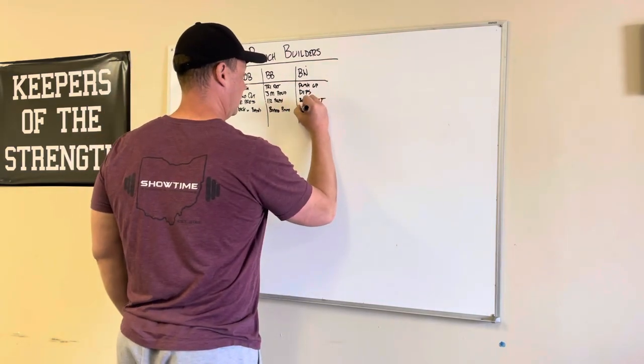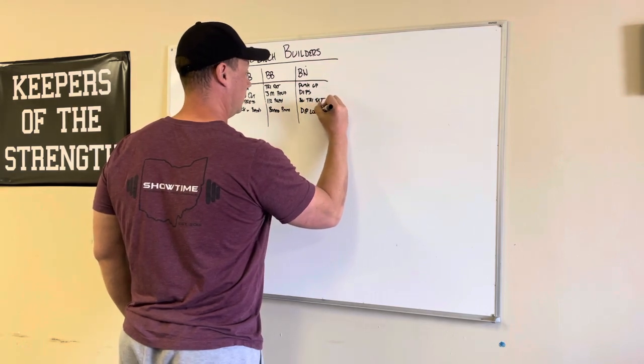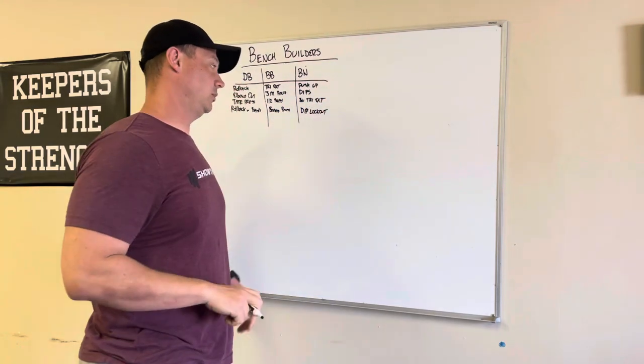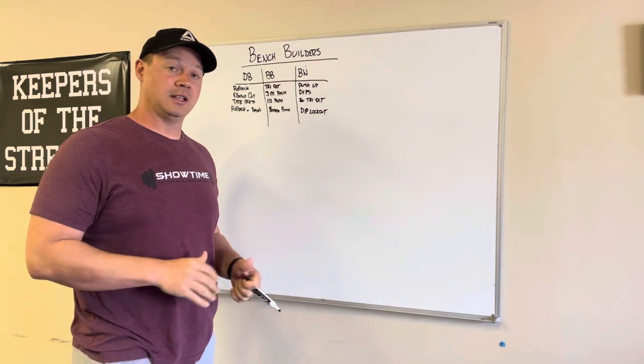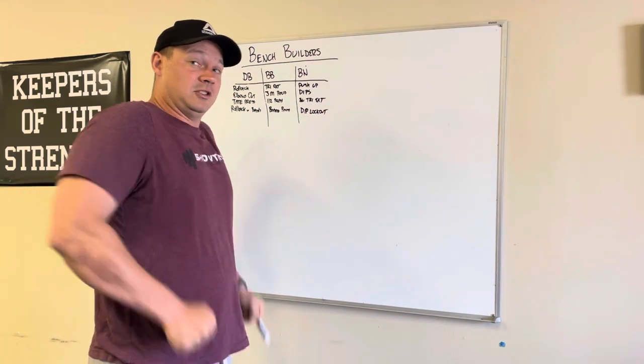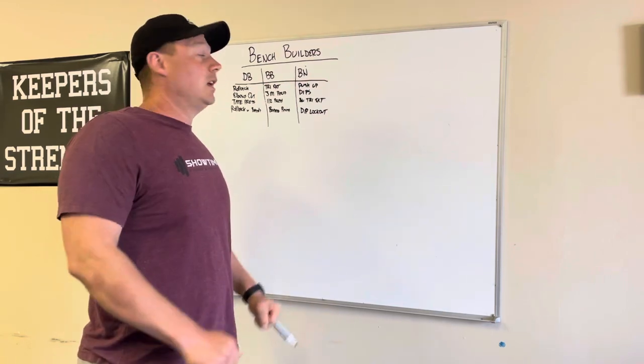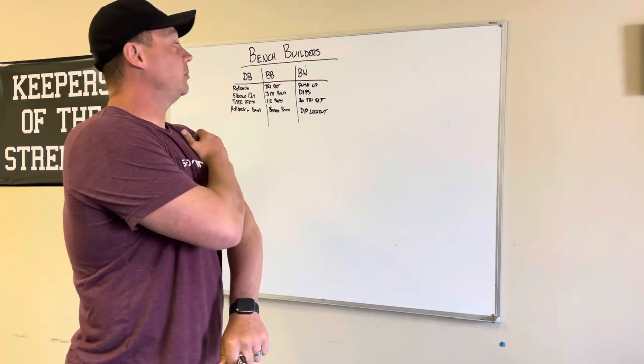And then dip lockouts. These are actually a pretty cool exercise. You can do these for higher reps. Get set up in a dip bar. And get it just about halfway up. And just do the lockout part. So just here. So just that real short motion. That's a great tricep builder.